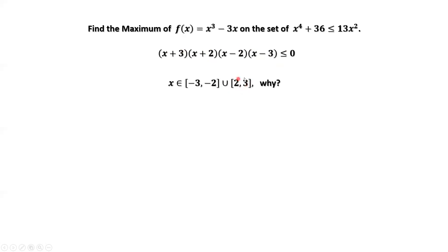Similarly, for the subinterval from 2 to 3, we can pick x = 2.7. Plugging in: this factor is positive, this is positive, this is positive, and this is negative — only one negative in the product. Therefore the left-hand side is less than or equal to 0. We have now found the set where this inequality holds.